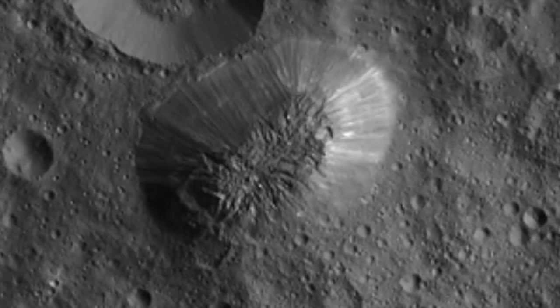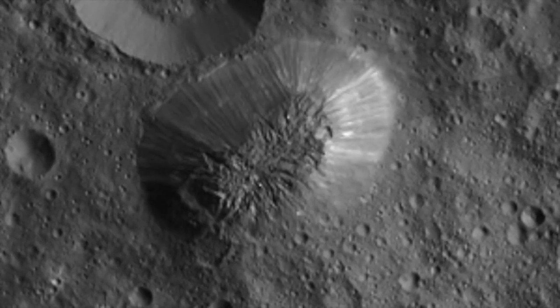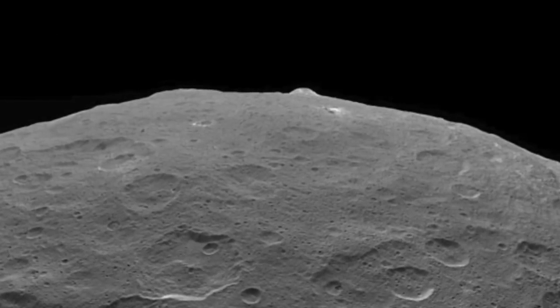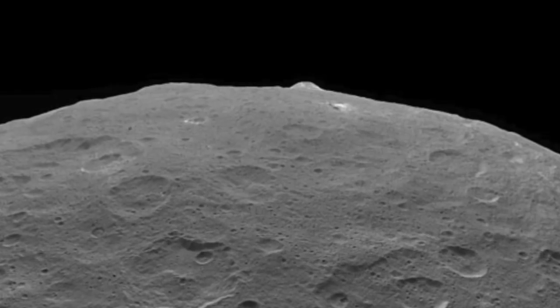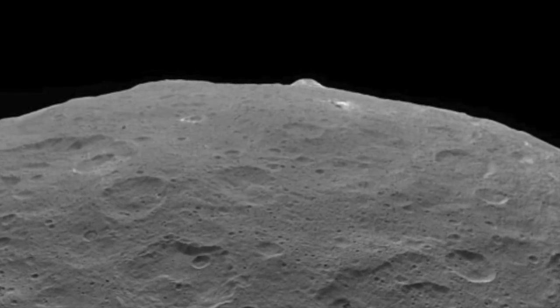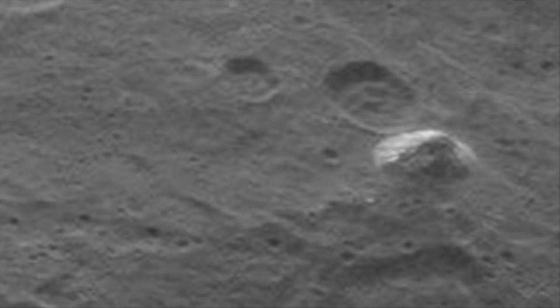These eruptions are referred to as cryomagma, or cryolava. During eruption, they are liquid, but are also released as a vapor. Cryovolcanoes are thought to be able to form on moons and asteroids that used to have an abundance of water.